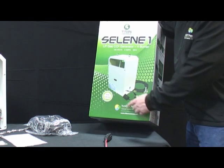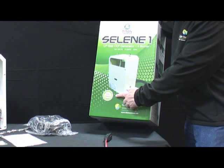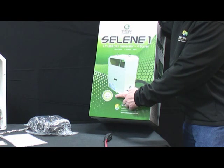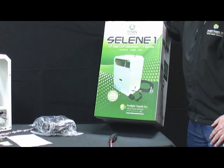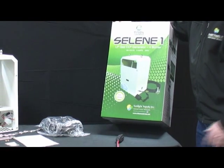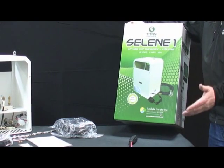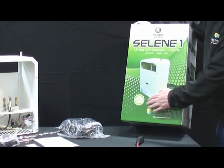You can see from the box here the Selene 1 is for small to medium areas. We make the Selene 2 for medium to large areas. Small to medium will be defined as anywhere from a four foot by four foot to a 15 by 15 and a large room would be about a 30 by 30.